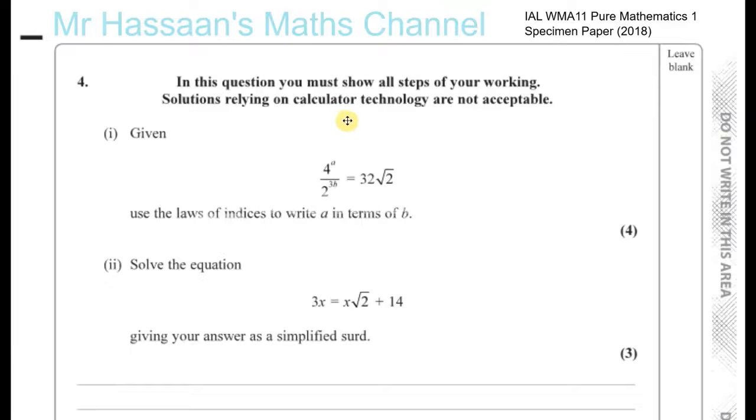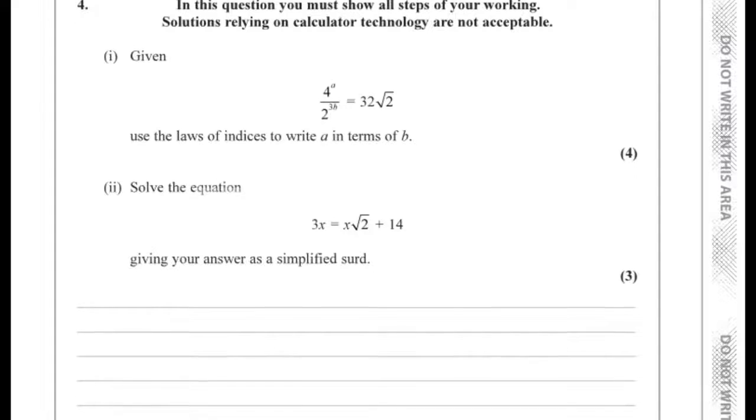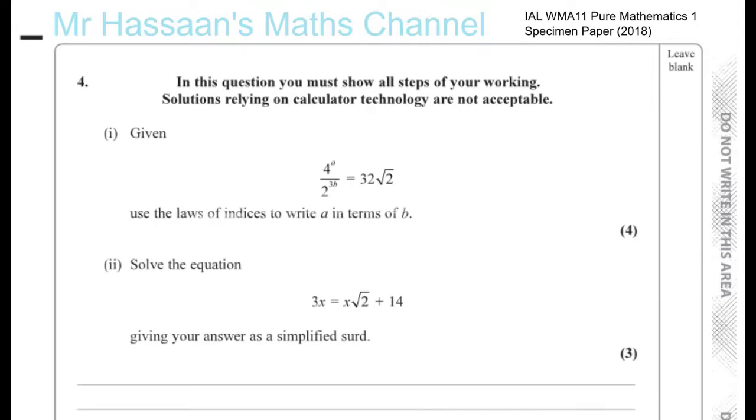We have here the specimen paper for the Pure Mathematics I, IAL, question number four. This question is about indices. Again, it's mentioned very clearly about showing all steps of the working and solutions relying on calculator technology are not acceptable. So you have to show the examiner you know exactly how to deal with indices without the use of your calculator.